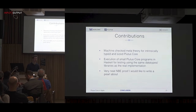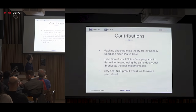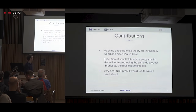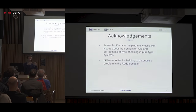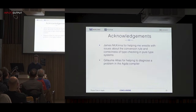The contributions are: a machine-checked version of the meta-theory for intrinsically typed and intrinsically sized Plutus Core; the ability to compile to Haskell and execute small examples, allowing comparison and testing against the real implementation. I'm extremely happy with the normalization by evaluation proof — it had to compute, so it had to be really good. I'd also like to acknowledge James McKinna, who was extremely helpful talking about pure type systems where conversion issues arise, and Guillaume Allais, who helped me when I ran headfirst into an Agda compiler bug.